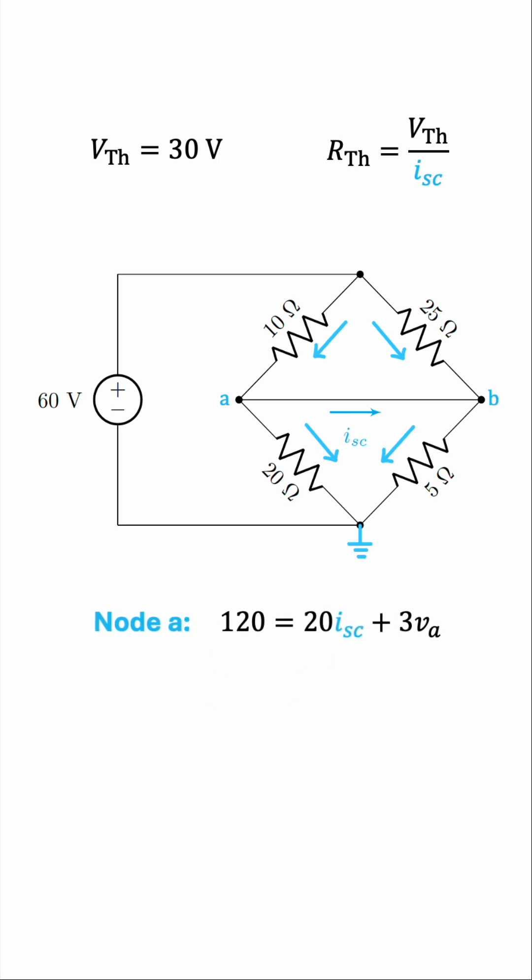At node B, we have 60 minus VB over 25, that's the current entering. I short circuit is also entering, and we have VB minus 0 over 5 leaving. Again, we'll simplify this equation by multiplying everything by 25, and this is the resulting equation we get. So we have two equations, but three unknowns, I short circuit, VA, and VB.